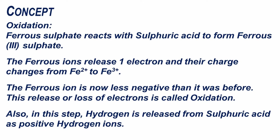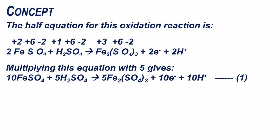Also in this step, hydrogen is released from sulfuric acid as positive hydrogen ions. The half-equation for this oxidation reaction is: 2 FeSO₄ + H₂SO₄ → Fe₂(SO₄)₃ + 2e⁻ + 2 H⁺ ions.